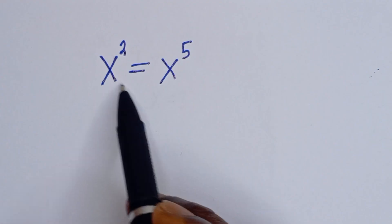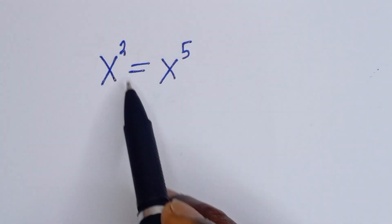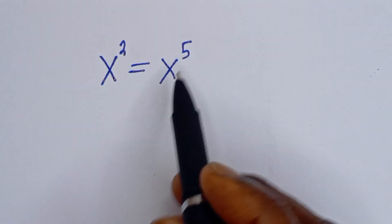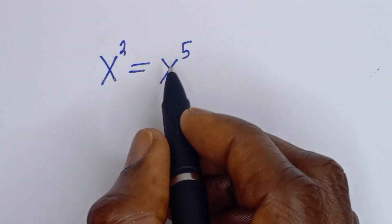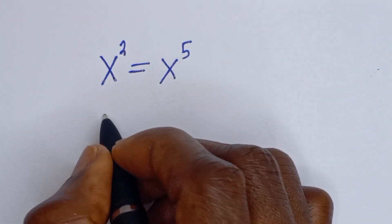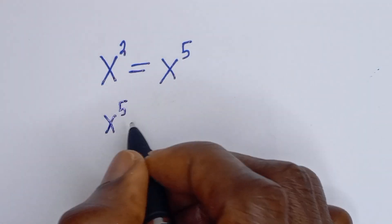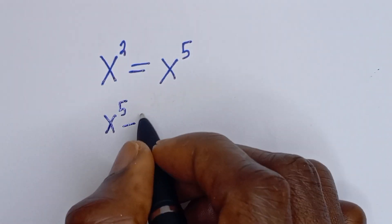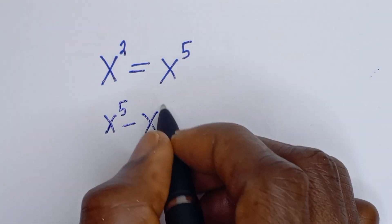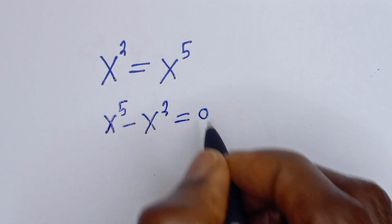Hello. How to solve for S from this given equation: S squared is equal to S to the power of 5. This can be written as S to the power of 5 minus S squared is equal to 0.